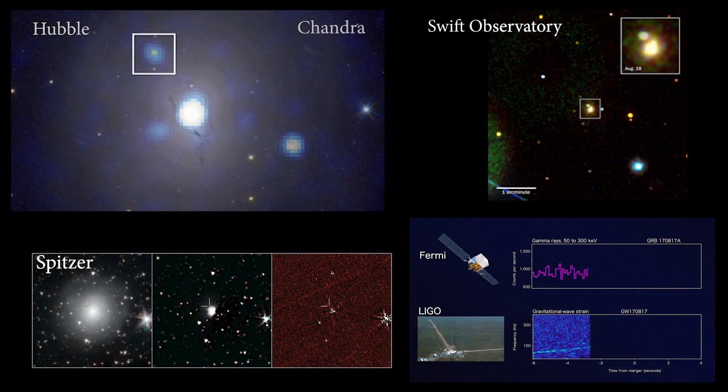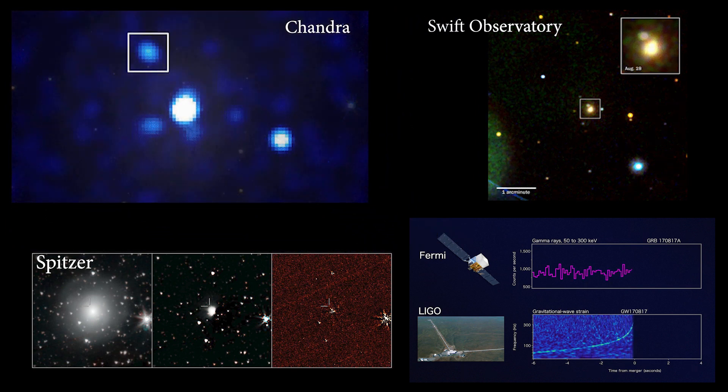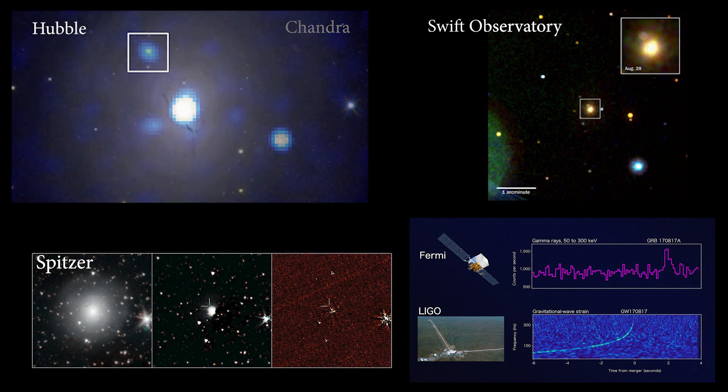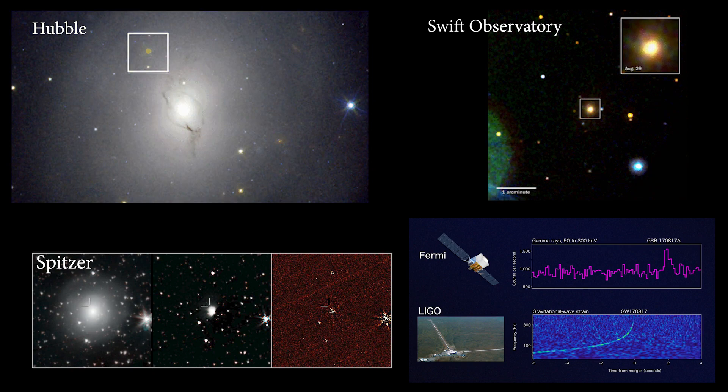A total of 70 observatories around the globe and in space collectively gathered data across the electromagnetic spectrum of the merger's aftermath.